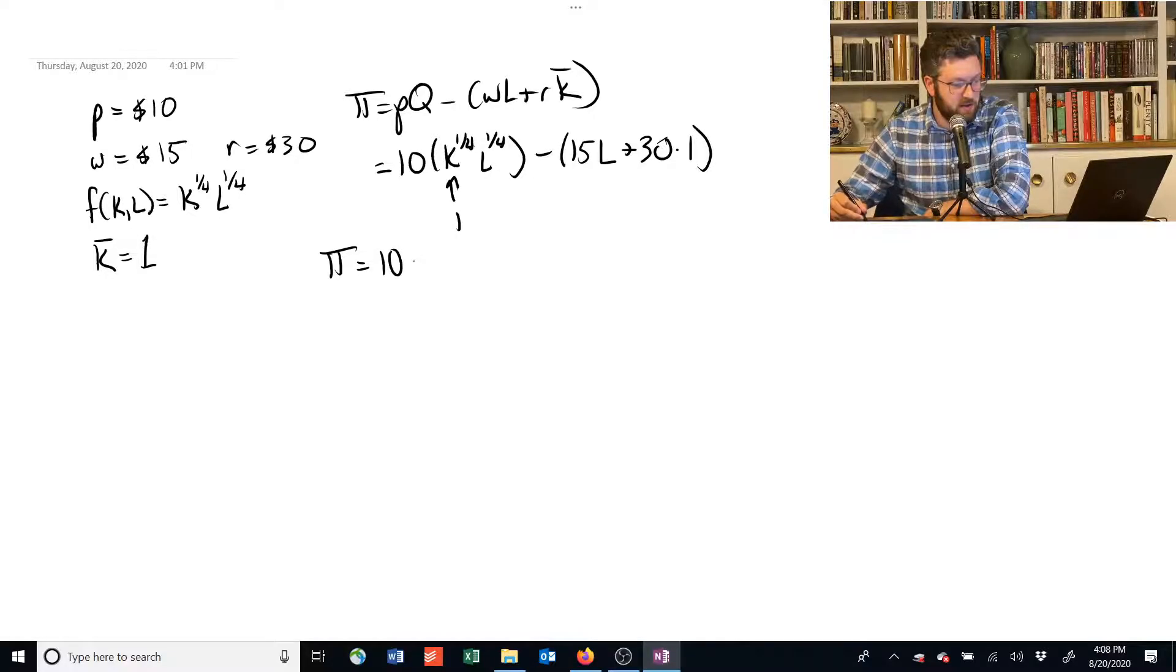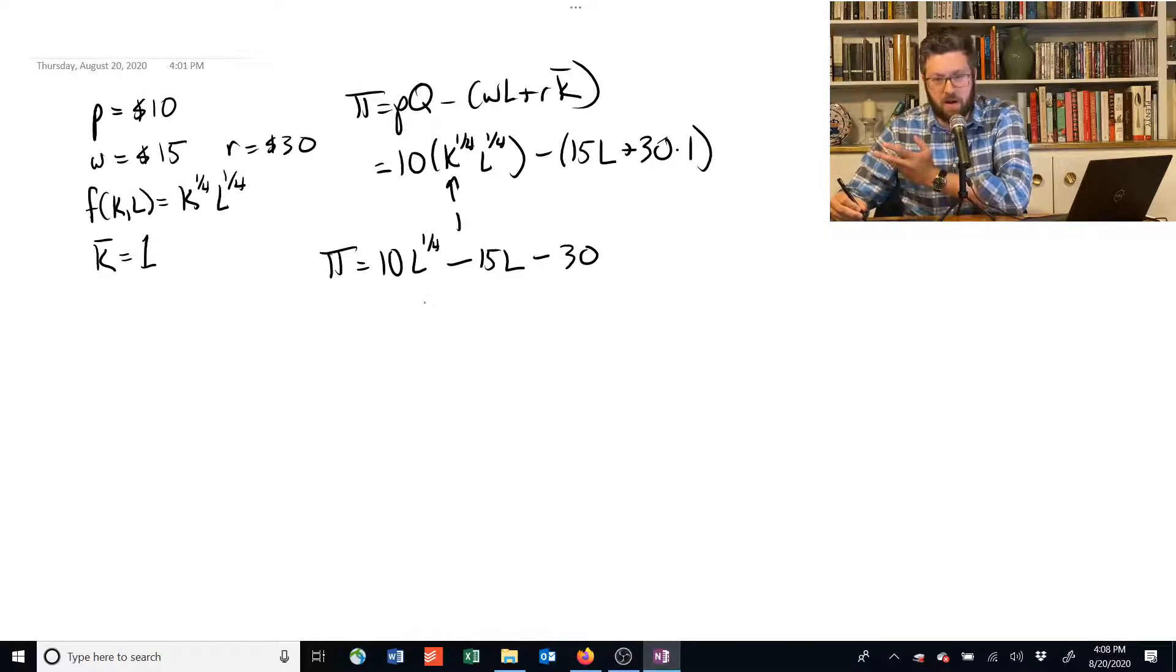And so our final equation looks like this. 10 times L to the 1/4, because 1 to the 1/4 is just 1, minus 15L minus 30. All right? That's our profit function.